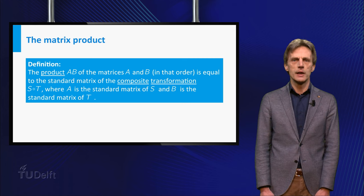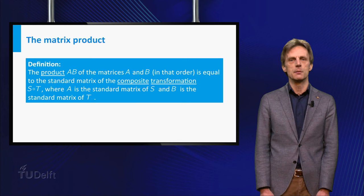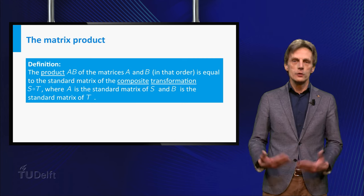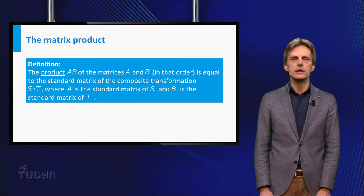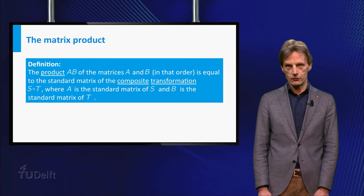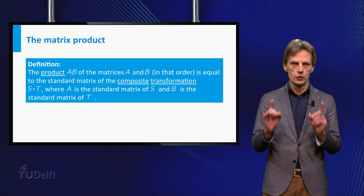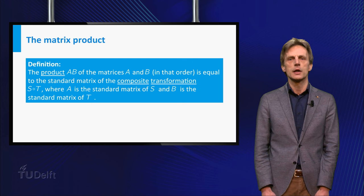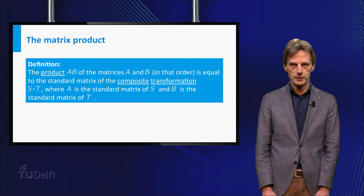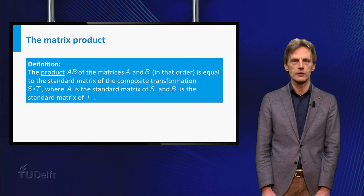While watching this video, you may already have been wondering what will happen if you change the order of A and B. When you multiply two numbers A and B, the order is irrelevant. That is, A times B is always equal to B times A. In matrix algebra this is not true, so in general, AB and BA will not be the same even if they are both well defined.